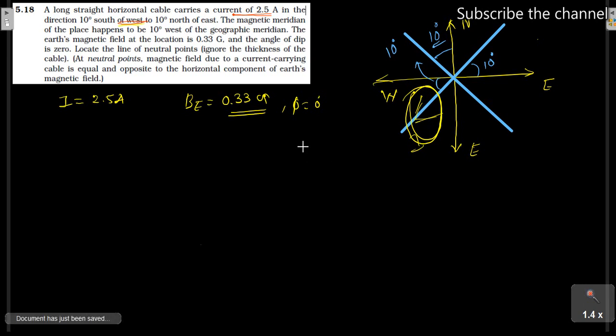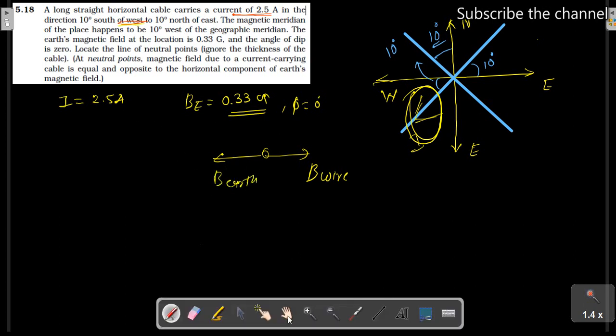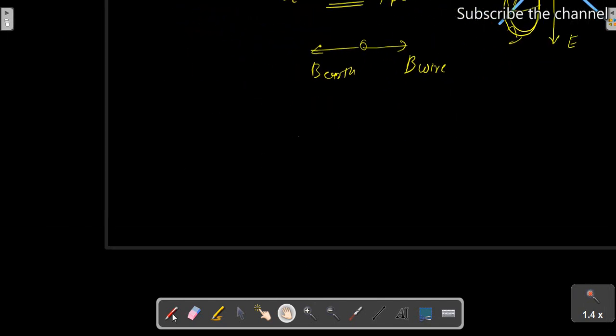So in short, I have said that the magnetic field will be like this. If you have to equate it, then you will get a null point. So what do you understand? This is the field due to wire, and this is the field due to earth. So both equate, and here the magnetic field is 0. So BE is equal to B due to wire.